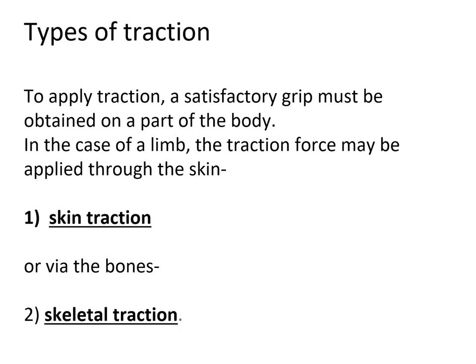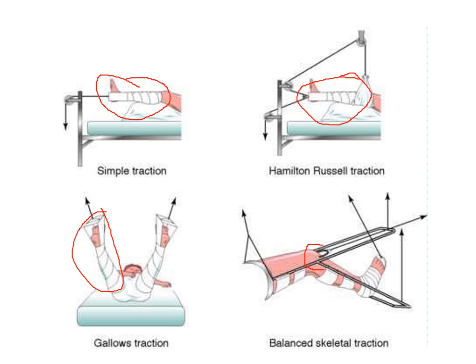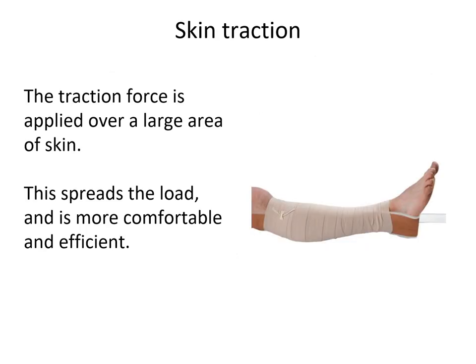Coming to the types of traction: traction can be applied directly to the skin or through the bone. If applied through the skin, it is skin traction; if applied through the bone, it is known as skeletal traction. Here we can see examples of skin traction, and here a pin is applied through the bone — this is skeletal traction.